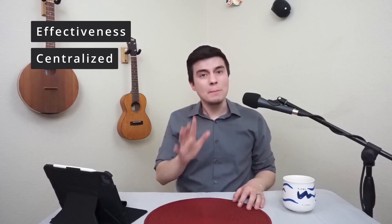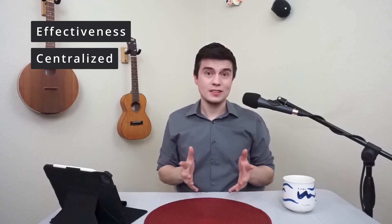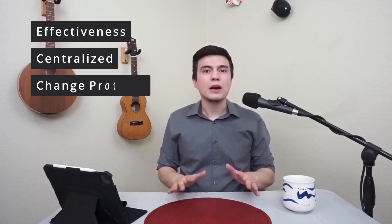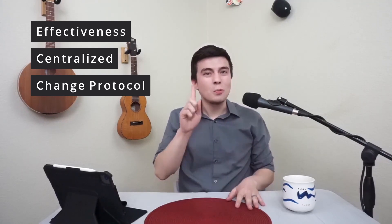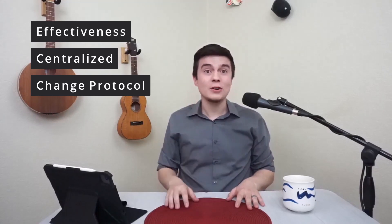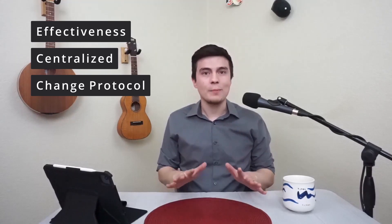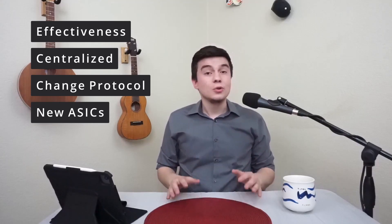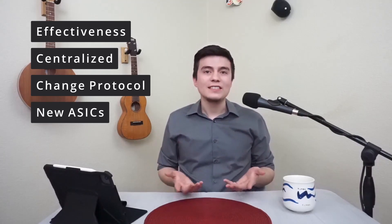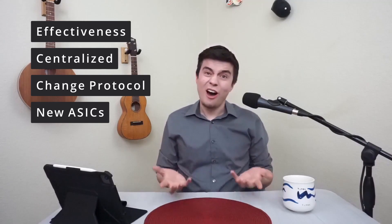There are different methods to make a coin ASIC resistant. For example, you could consistently change the mining protocol to make an ASIC, which is entirely dedicated to one job being done in one specific way, to stop working properly. This means that a brand new ASIC would have to be made. Do this often enough, and making an ASIC is just not worth the cost.